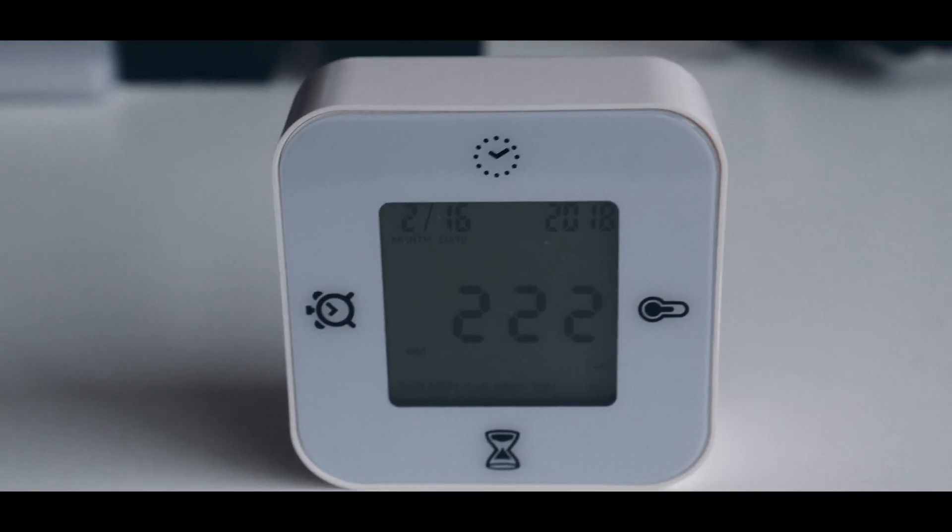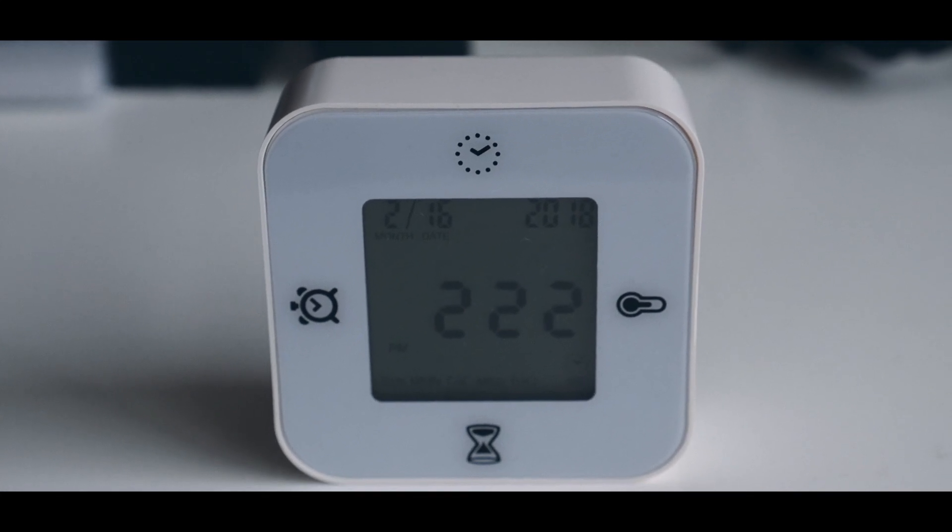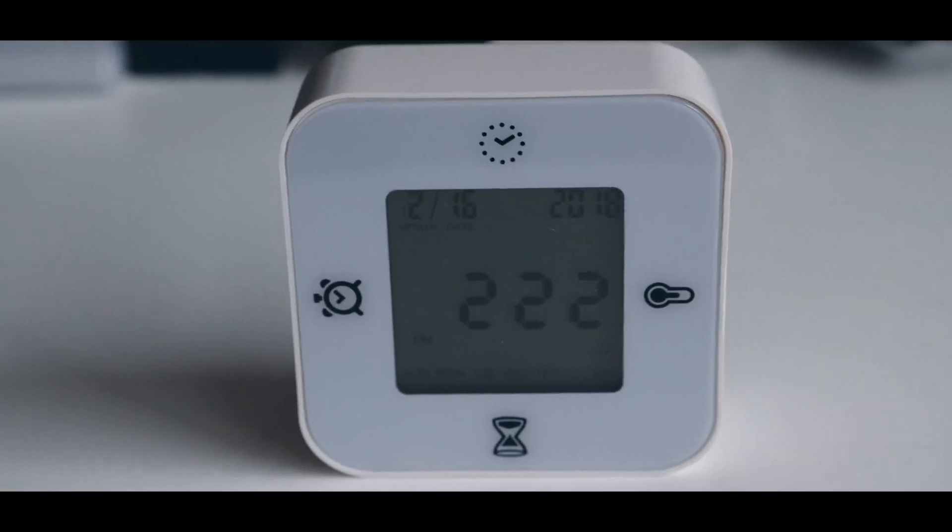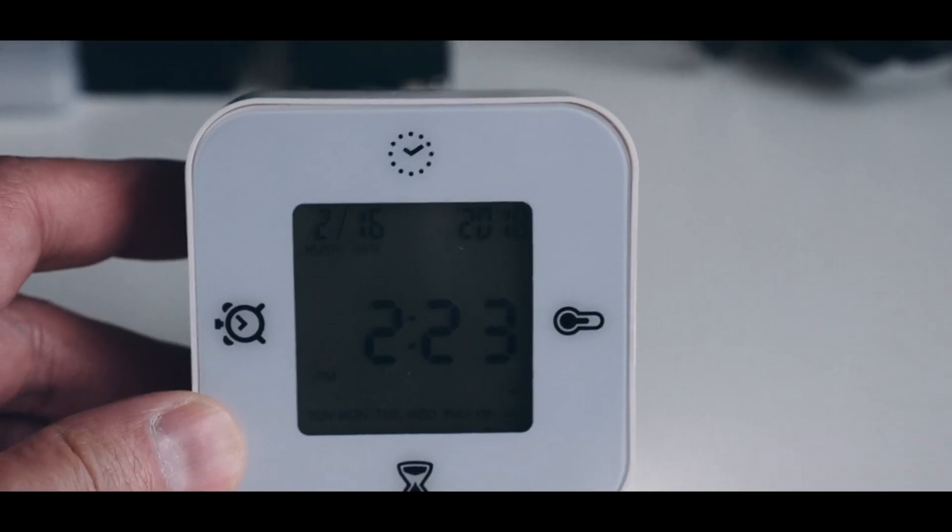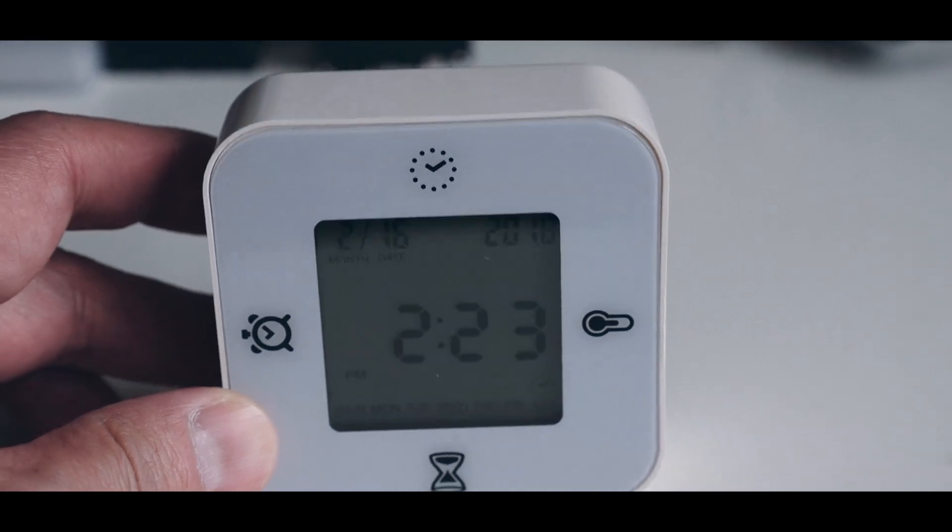Hey everyone, today I'm just going to quickly tell you a little bit about this cool clock I got from IKEA for $5. It's called the Clockus. It uses two AAA batteries and it's got four functions.